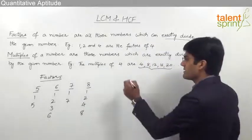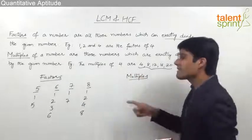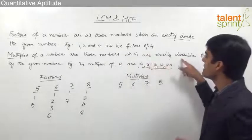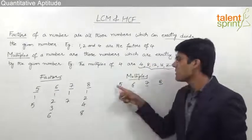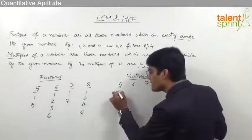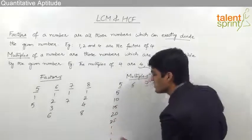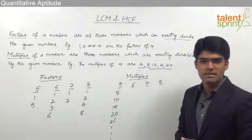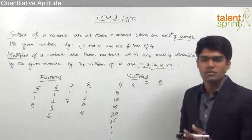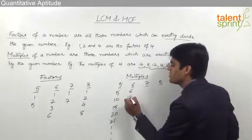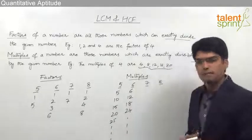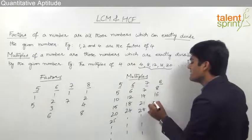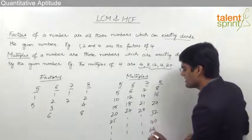Now let us look at multiples. Multiples are those numbers which are exactly divisible by the given number. The multiples of 5 are 5, 10, 15, 20, 25 and so on — all exactly divisible by 5. The multiples of 6 are 6, 12, 18, 24 and so on. The multiples of 7 are 7, 14, 21, 28 and so on. The multiples of 8 are 8, 16, 24, 32, 40, 48 and so on, up to infinity.